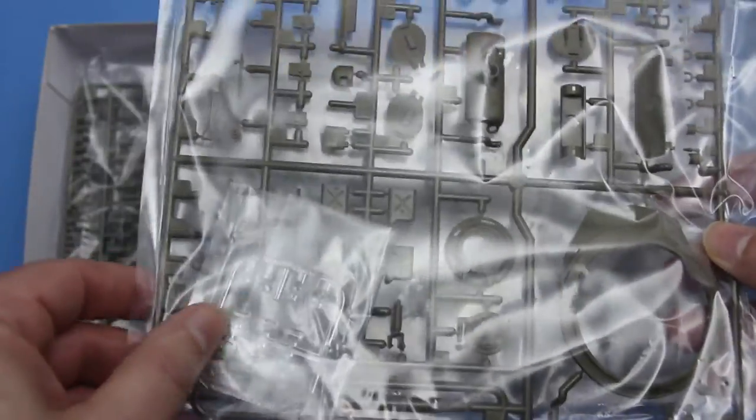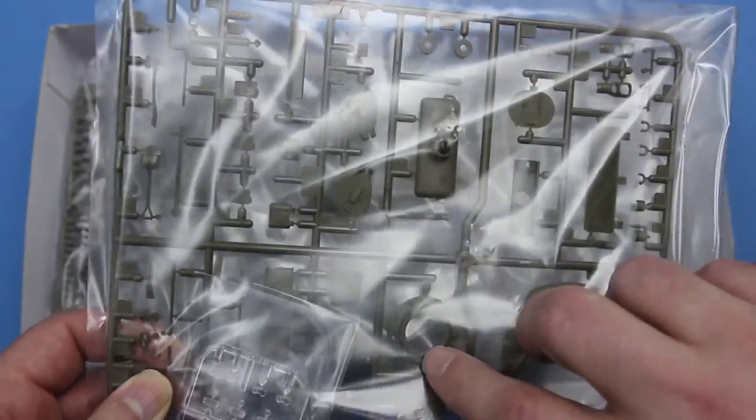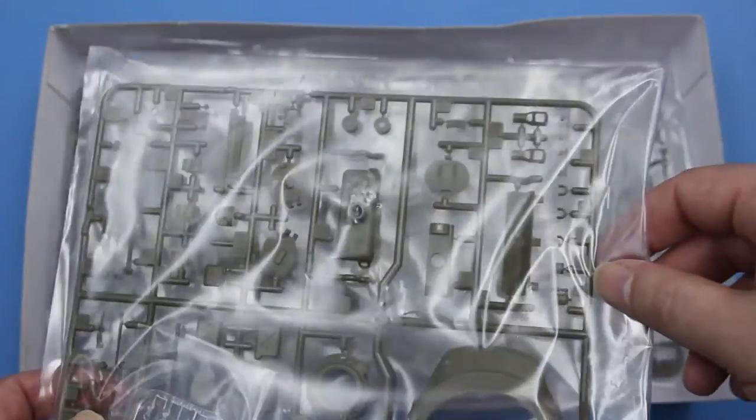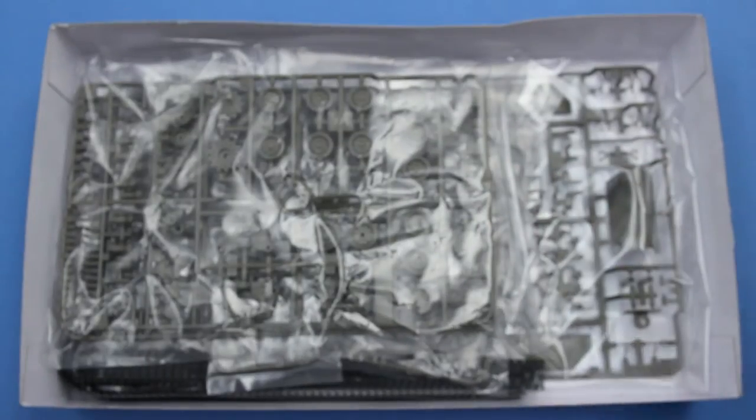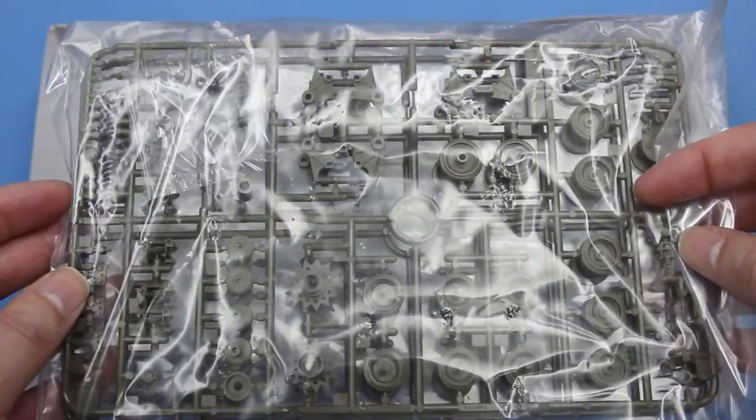And the sprue with some bits for the turret including the lower turret and the turret ring. And some transparent bits, the mantlet, the hatches. And two identical sprues containing the wheels and bogeys.